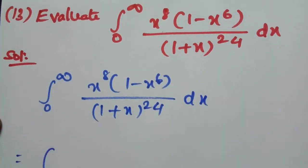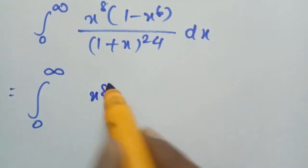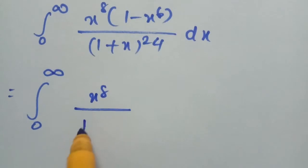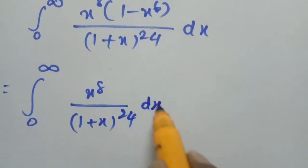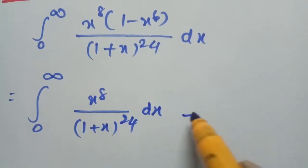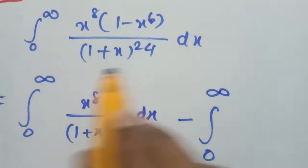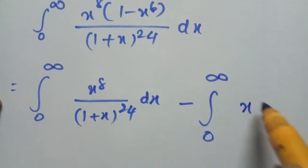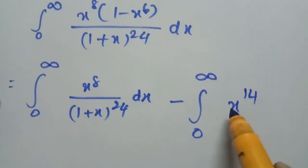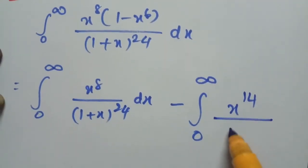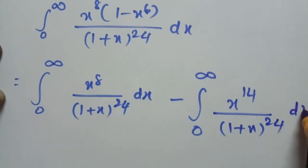Take the given integral. This can be written as the integral from 0 to infinity of x to the power 8 divided by (1 plus x) to the power 24. Multiplying and separating the integration, we get the integral from 0 to infinity of x to the power 8 times x to the power 16, minus x to the power 8 times x to the power 6, that is x to the power 14, divided by (1 plus x) to the power 24, dx.